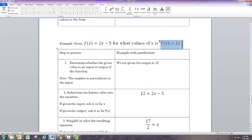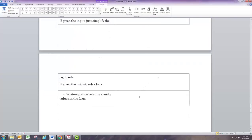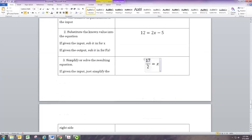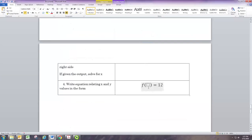At the end, we just want to write this out using the function notation, and there it is. The input is 17 over 2, the output is 12. So f(17/2) = 12.